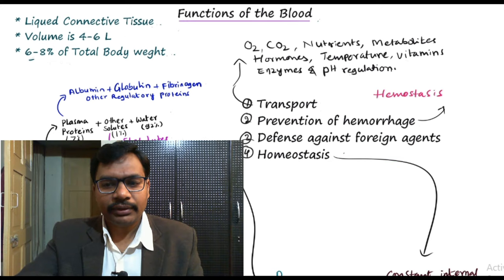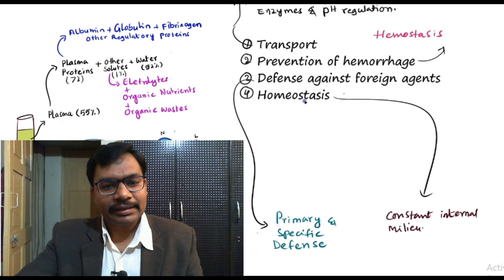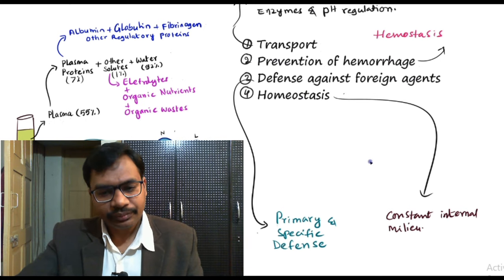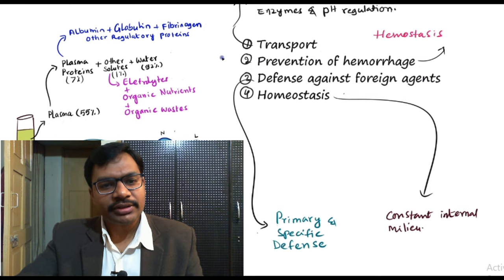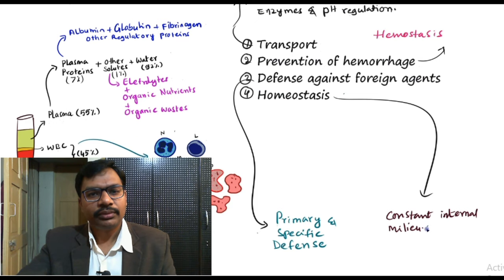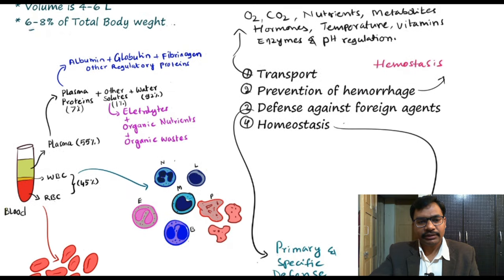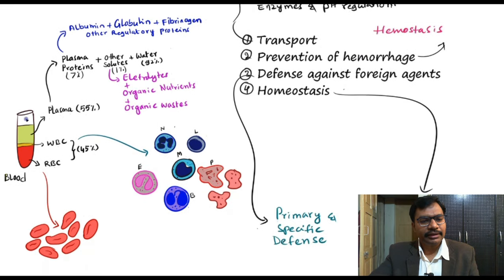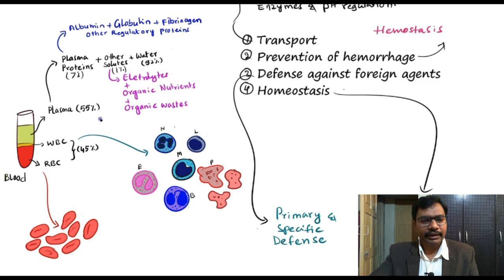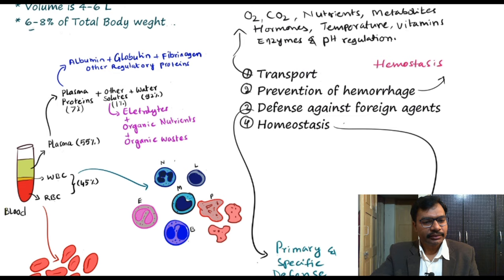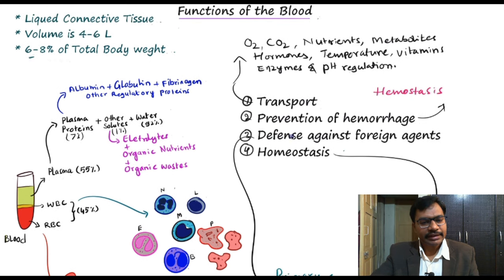One more function is homeostasis — the constant maintenance of the internal environment. So these are the basic functions of the blood. In this lecture we covered the organization of the blood, its components — plasma, WBCs, RBCs, the liquid part and cellular part — along with the sub-parts of plasma and blood cells, and the major basic functions of the blood.